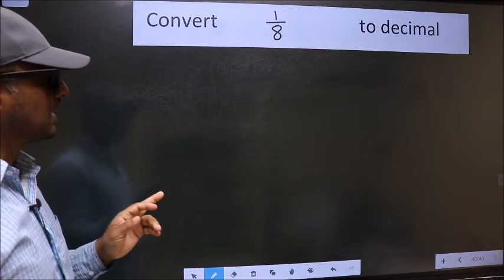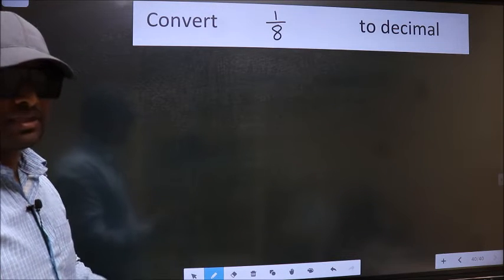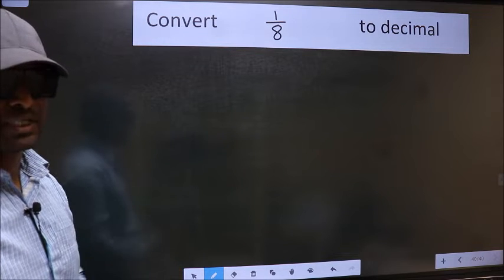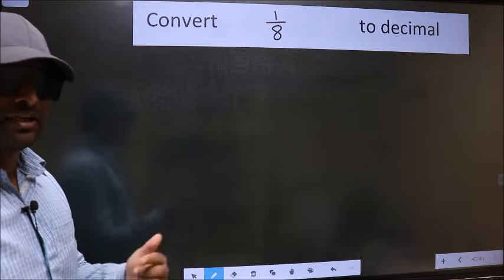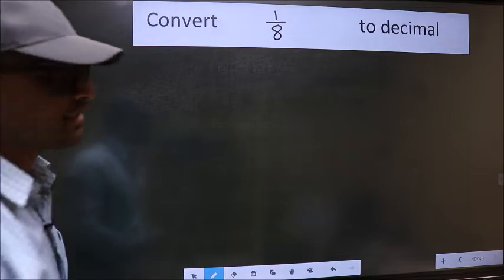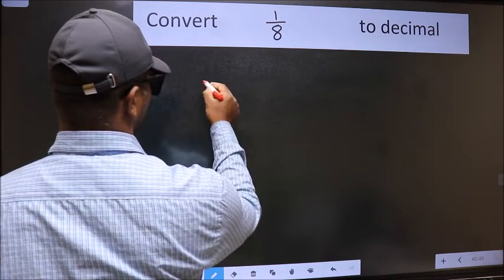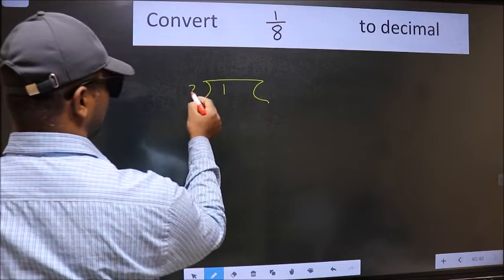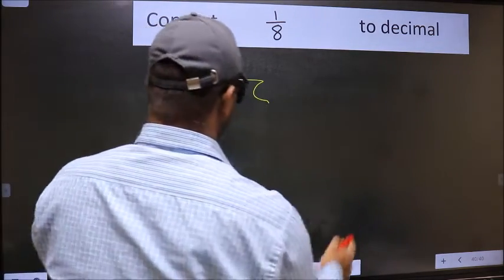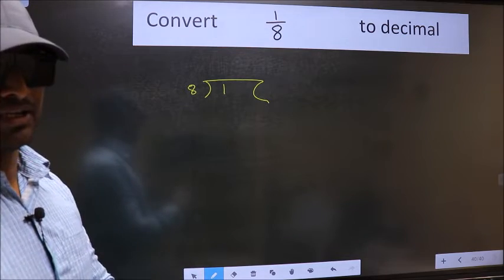Convert 1 by 8 to decimal. To convert into decimal, we should divide. To divide, we should frame it in this way: 1 here and 8 here. This is your step 1.